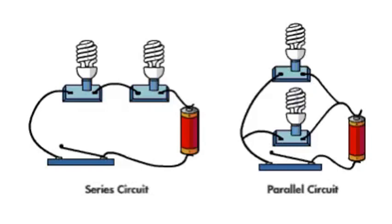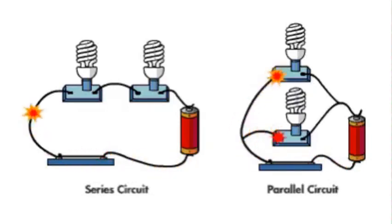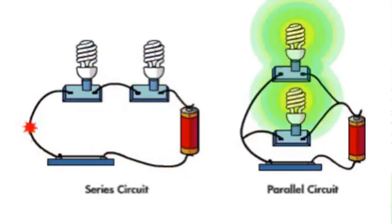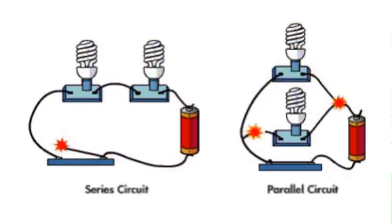This is a parallel circuit — electrons have two pathways to go through. They will leave the negative terminal of the battery to go through the first pathway and the second pathway. If one of the light bulbs is missing or damaged, the second one will keep lighting. Here, the wire is cut but the second light bulb is still on.